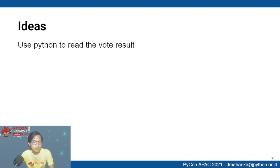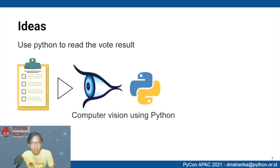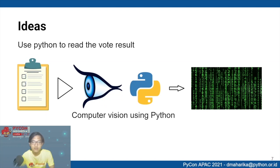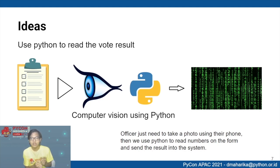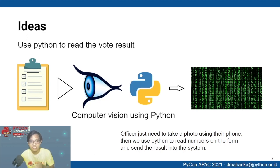The idea is to use Python to read the vote result from the form. We use computer vision based on Python to convert the form image into a digital value. Because the form is an image, it has no digital result — so we need computer vision to read the image and interpret what numbers are inside the form. Officers just take a photo with their phone after counting, send it to the server, and the server reads the form using Python to extract the numbers and send the result to the system.